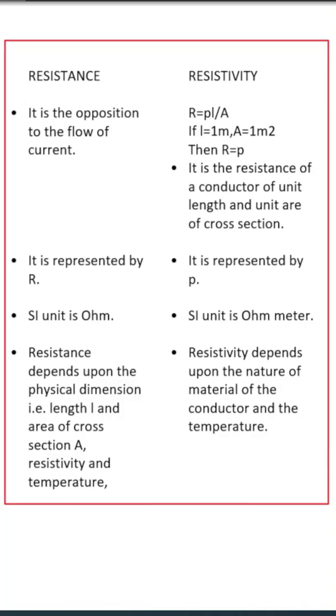Let's understand this better with the help of formula. Now resistance R is given by R equals Rho L by A. Now if you take L as 1 meter and area as 1 meter square, then R equals Rho, which means that resistivity is the resistance of conductor of unit length and unit area of cross section.